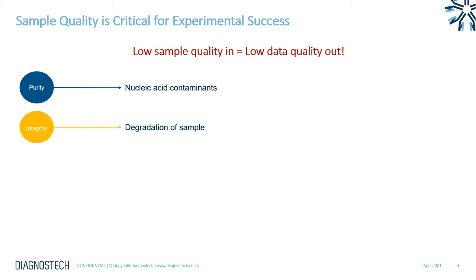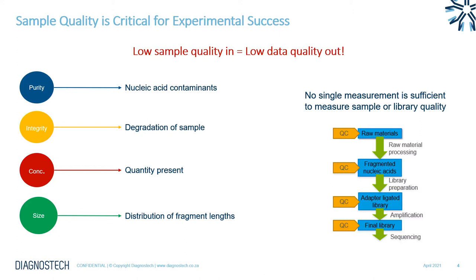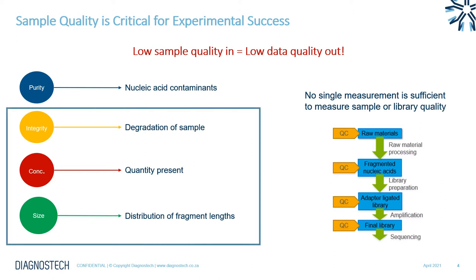There are generally four parameters we want to measure when referring to sample quality: purity, looking at any contaminants in the nucleic acid; integrity, meaning how degraded your sample is (less high molecular weight DNA means more degradation); concentration, meaning what quantity of sample you have available; and size, referring to the distribution of fragment lengths within your sample. A standard NGS workflow representation shows where the different QC steps fall into the workflow. No single measurement is really enough to measure your sample or library quality. The TapeStation is able to measure three of these parameters — integrity, concentration, and size — while purity is generally measured by an instrument such as a NanoDrop.